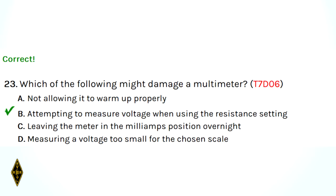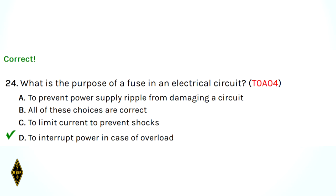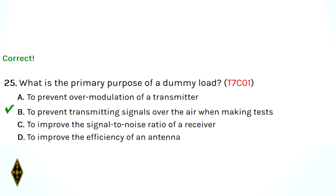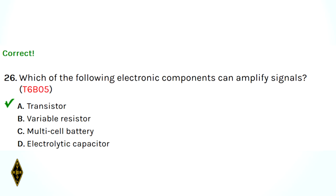Question 23: which of the following might damage a multimeter? Attempting to measure voltage when the multimeter is in the resistance setting — that'll let the smoke out of the multimeter. Question 24: what is the purpose of a fuse in an electrical circuit? It's to interrupt the power in case of a current overload — if too much current is drawn, the fuse opens up. Question 25: what is the primary purpose of a dummy load? Also known as a test antenna, it prevents transmitting signals over the air when making tests. It can be a resistor in a can of mineral oil and should not radiate. Question 26: which electronic component can amplify signals? A transistor — it has gain, and when set up appropriately, it can amplify signals.